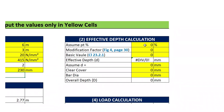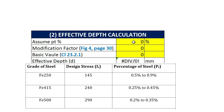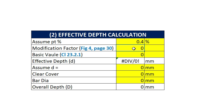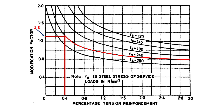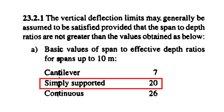Moving to the second step, in which we need to calculate the effective depth of the slab. First of all, we need to assume the percentage of steel. Let's assume 0.4% of steel. The modification factor is derived from Figure 4 on page 30 of IS 456-2000. The value of FS corresponding to Fe415 is 240, and the modification factor for 0.4% of steel corresponding to FS equal to 240 will be 1.3. So we need to input 1.3 in this box. The basic value comes from clause 23.2.1 of IS 456-2000, according to which for a simply supported beam or slab the basic value is 20.